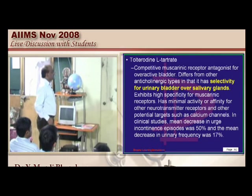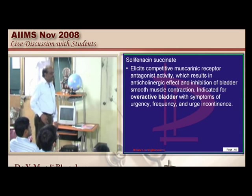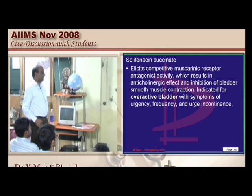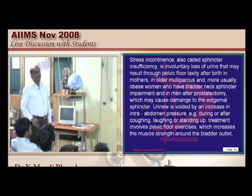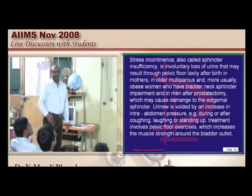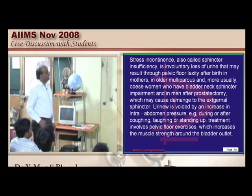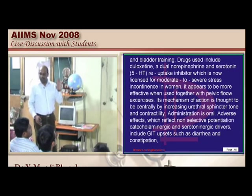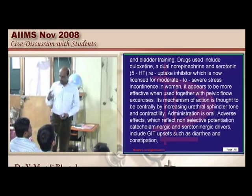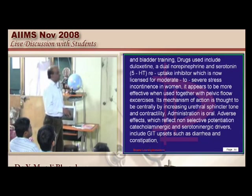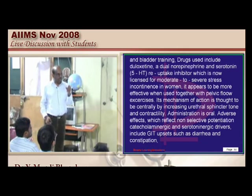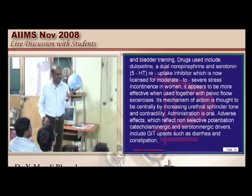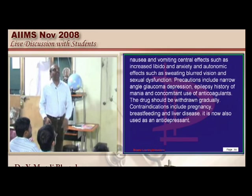Similarly, solifenacin is another muscarinic receptor antagonist with anticholinergic action that inhibits bladder smooth muscle. But the answer to this question is that we don't use duloxetine. Duloxetine is a 5-HT and norepinephrine reuptake inhibitor. Norepinephrine and 5-HT are important for sphincters, because the sphincter is more sympathetic. They strengthen sphincteric contractility by causing reuptake inhibition of norepinephrine at the sympathetic innervation of the sphincter.